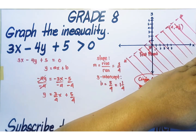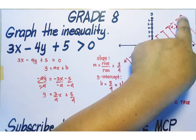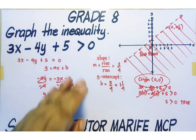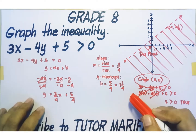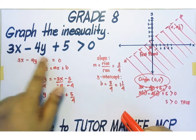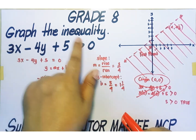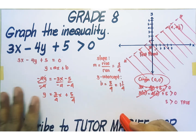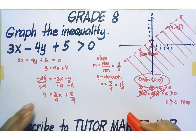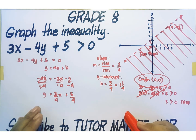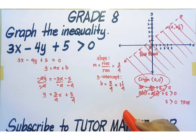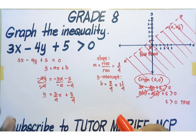This is the origin, and this is the half plane that contains the origin. This shaded half plane, not including the boundary line, represents the solution set of this given inequality. That's it — I have graphed the given linear inequality in two variables. I hope this video is helpful to you. Should you have any questions or want further clarification, feel free to post your comments. Again, this is Tutor Marifeh MCP and I thank you for taking the time to watch my video.